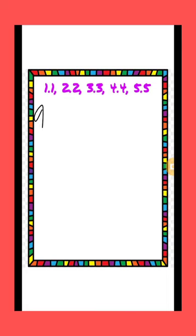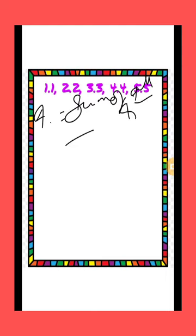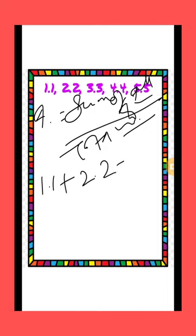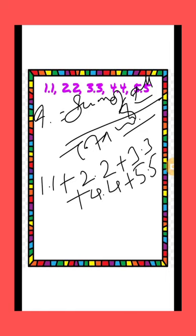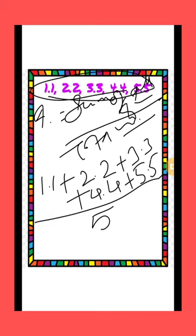First of all, we will write the formula of average, which is equal to sum of all quantities divided by total number of quantities. So first of all, we will add all the quantities: 1.1, 2.2, 3.3, 4.4, 5.5. There are a total of 5 quantities, so we will divide it by 5.